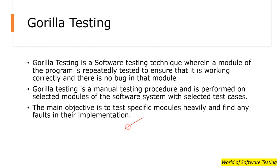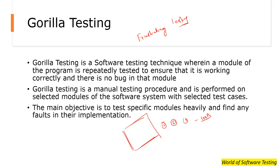For example, we have one module and we are testing it for the first time, then in a similar manner with similar data a second time, third time — we are doing it for the module 100 times in the same manner. That's why gorilla testing is also known as frustrating testing, torture testing, or fault tolerance testing — because we are testing the same module hundreds of times manually in the same manner.